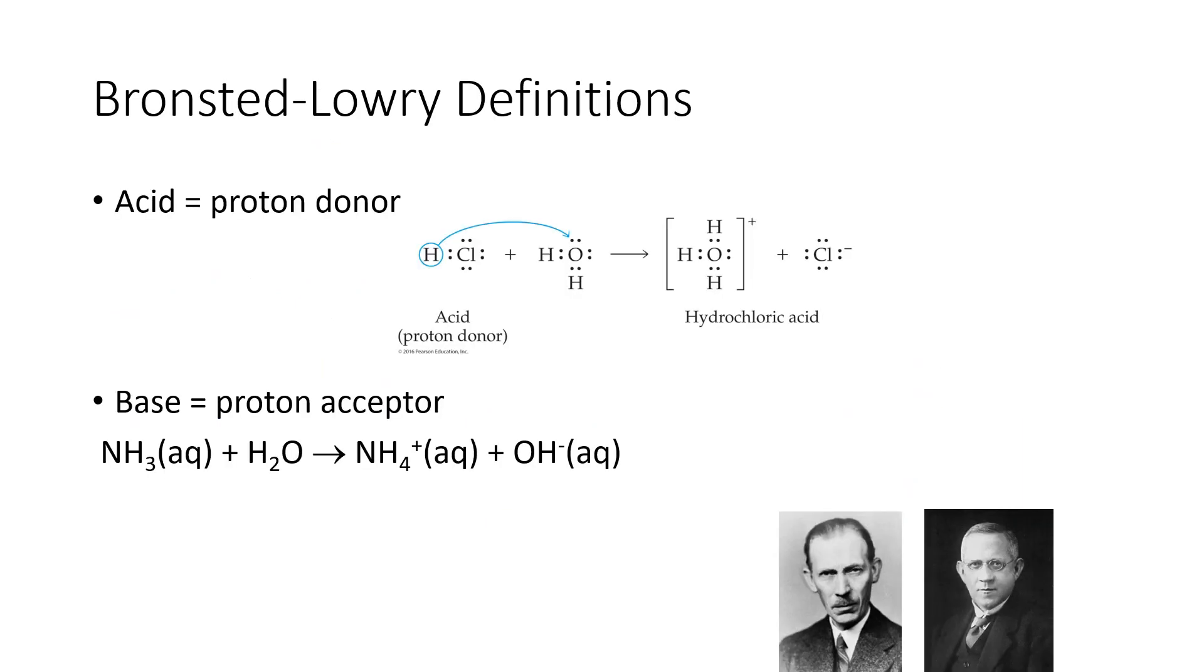According to the Bronsted-Lowry definition, an acid is a proton donor. But we saw on the previous slide that a proton is the same thing as an H+ ion. So really, the Bronsted-Lowry acids and the Arrhenius acids are pretty much the same thing. So for instance, HCl is an Arrhenius acid, but it's also a Bronsted-Lowry acid.